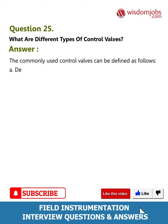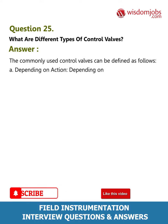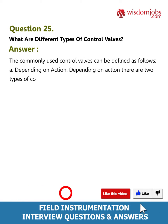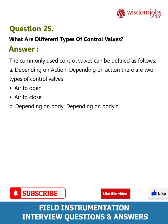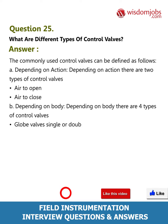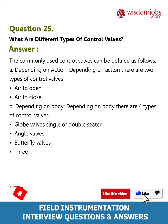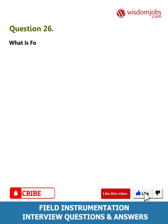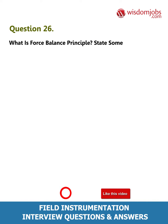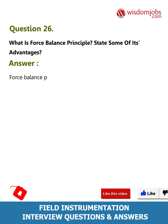Question 25: What are the different types of control valves? Answer: The commonly used control valves can be defined as follows. Depending on action, there are two types: air to open and air to close. Depending on body, there are four types: globe valves (single or double seated), angle valves, butterfly valves, and three-way valves.